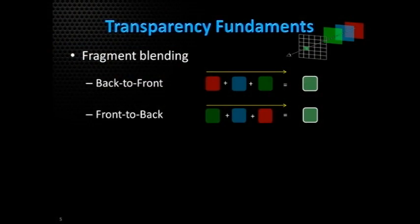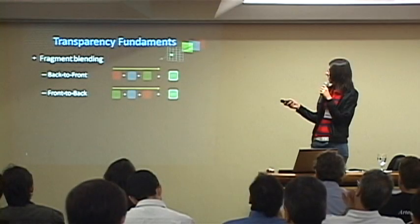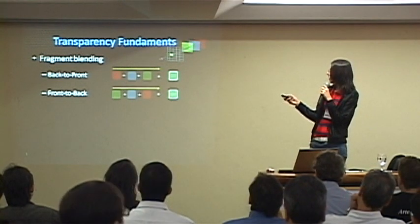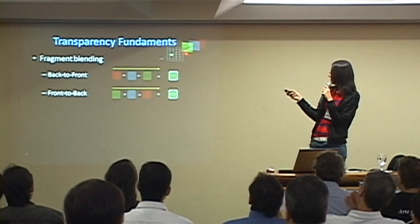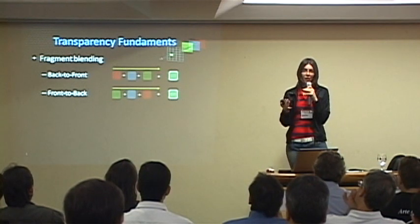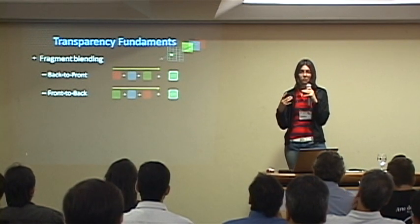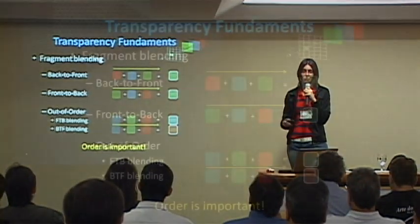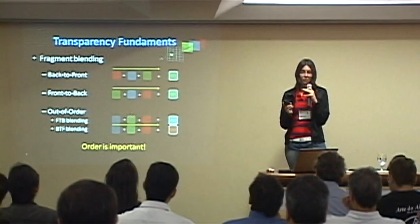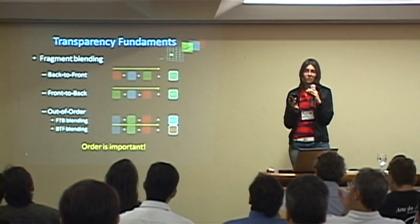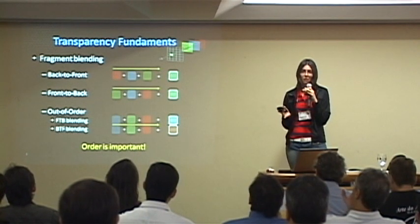From Porter and Duff, we have the blending equations and we can compose fragments in back-to-front order — red first, then blue, then green — or in front-to-back order, and we will get the correct transparency combination. If we render the transparent fragments in any other order, the results will be wrong. What I want to make clear is that order is important because the blending equations are order dependent.